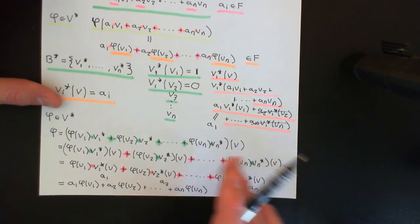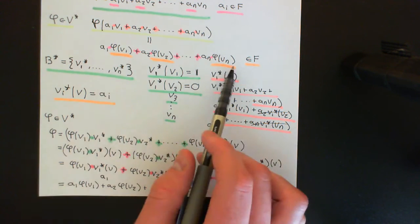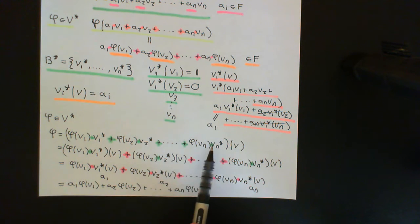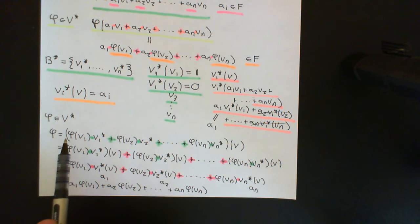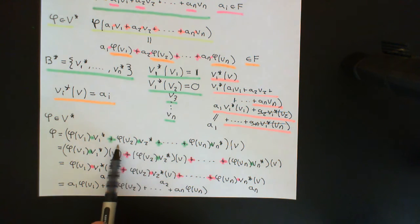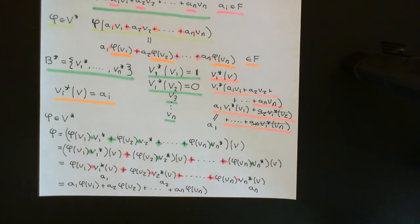As soon as you know where a co-vector phi sends all the basis vectors, you can write it as a linear combination of the dual basis vectors V1 star through Vn star. The scalar coefficients are phi(V1), phi(V2), all the way up to phi(Vn) — that is the linear combination in the dual vector space that any co-vector is equal to.